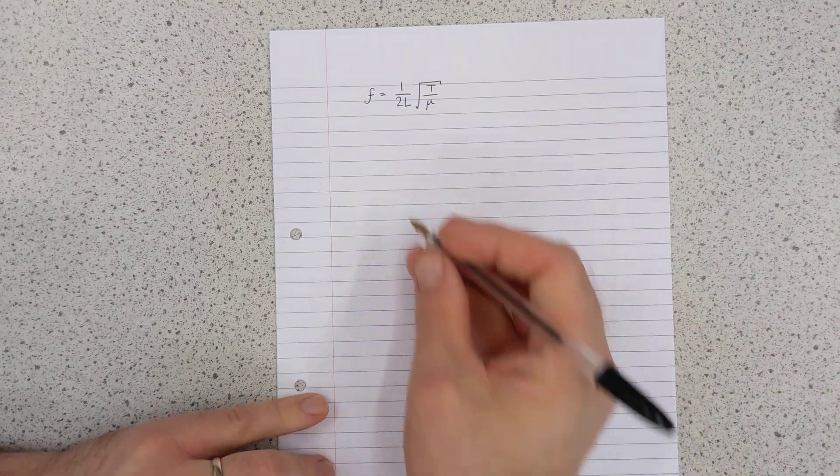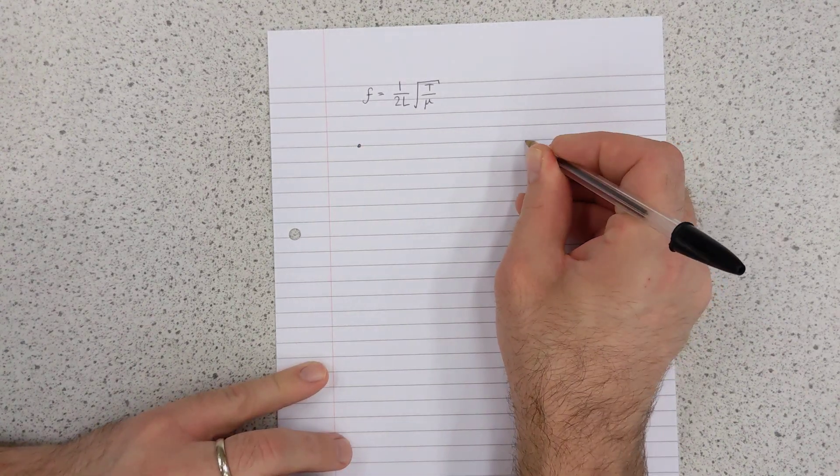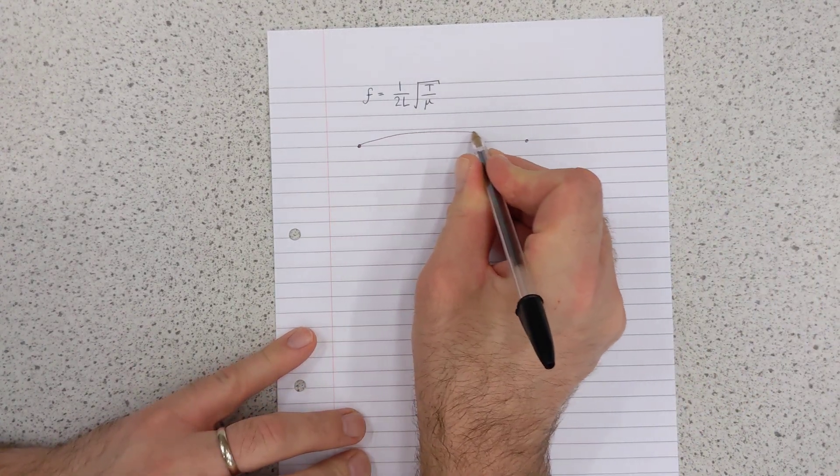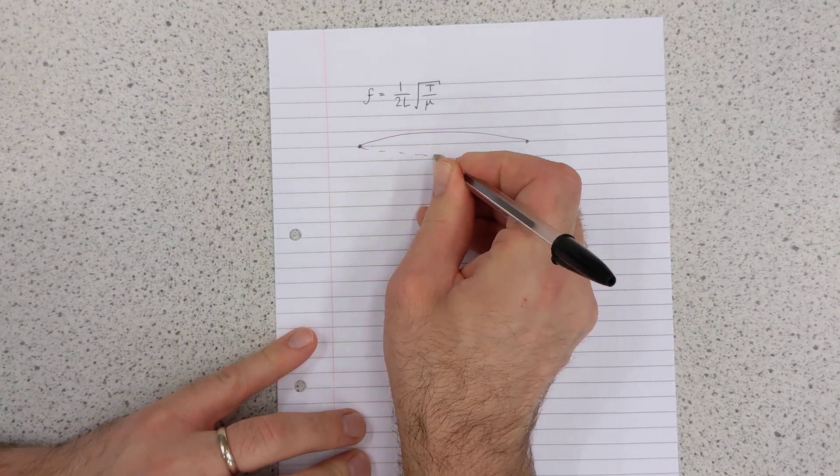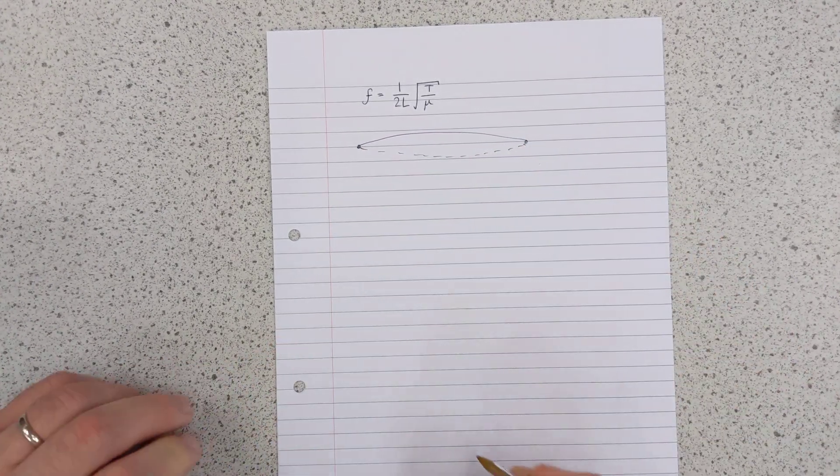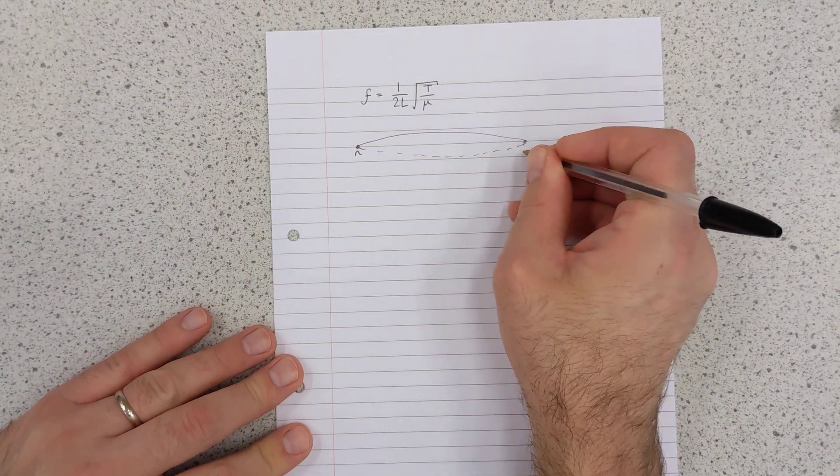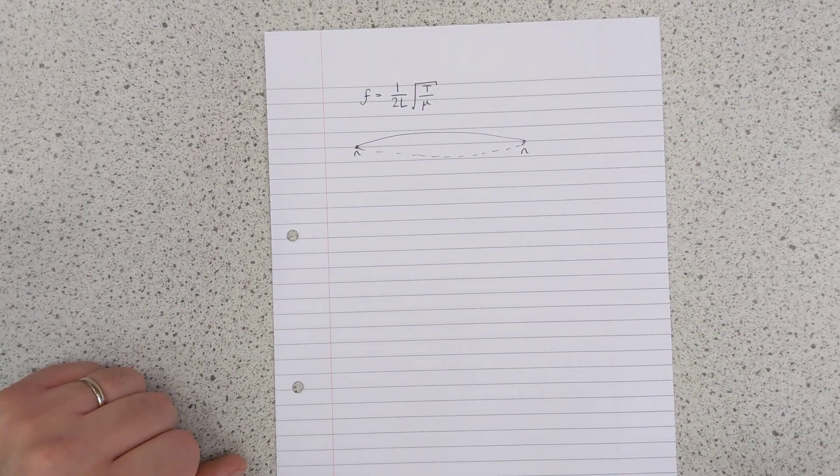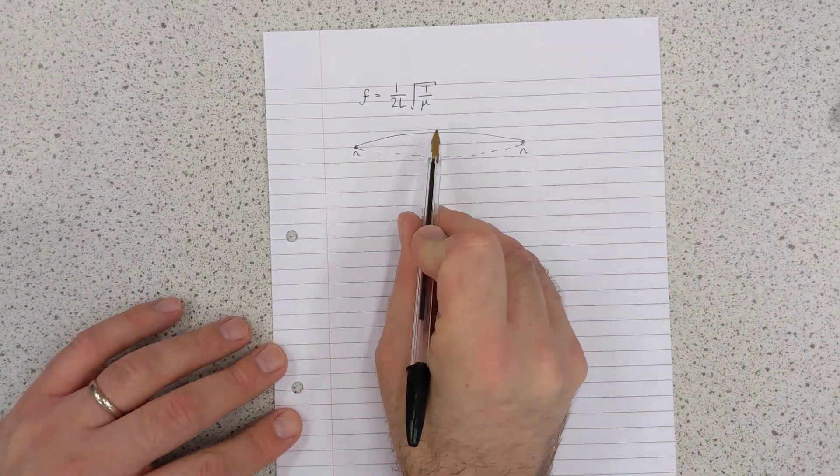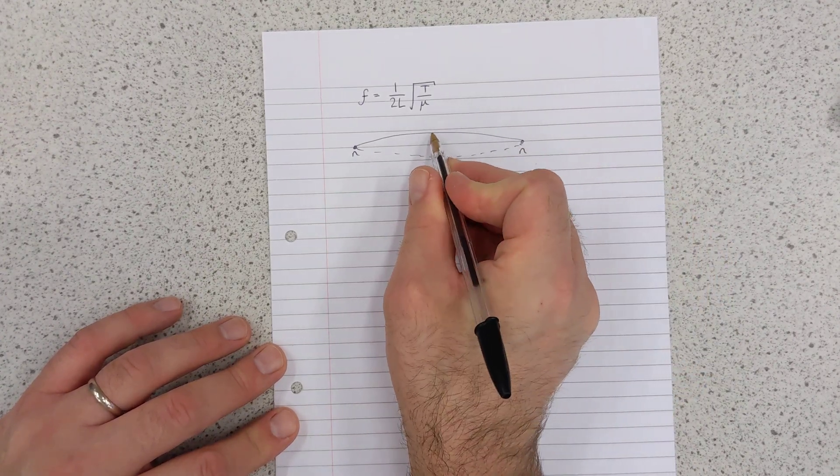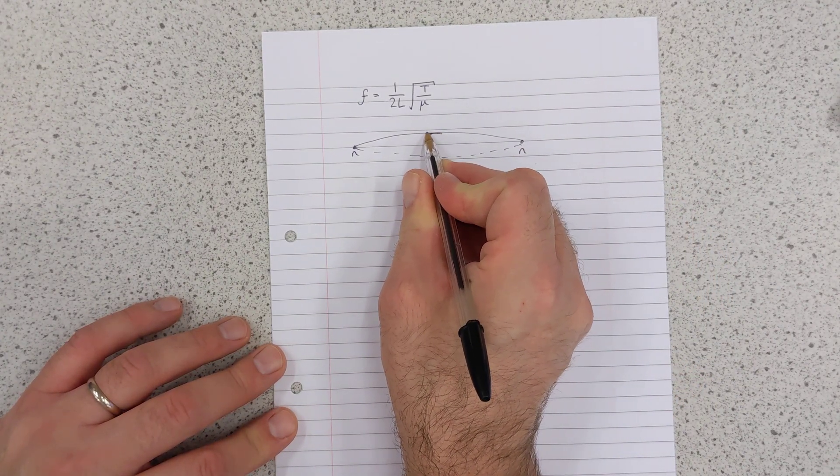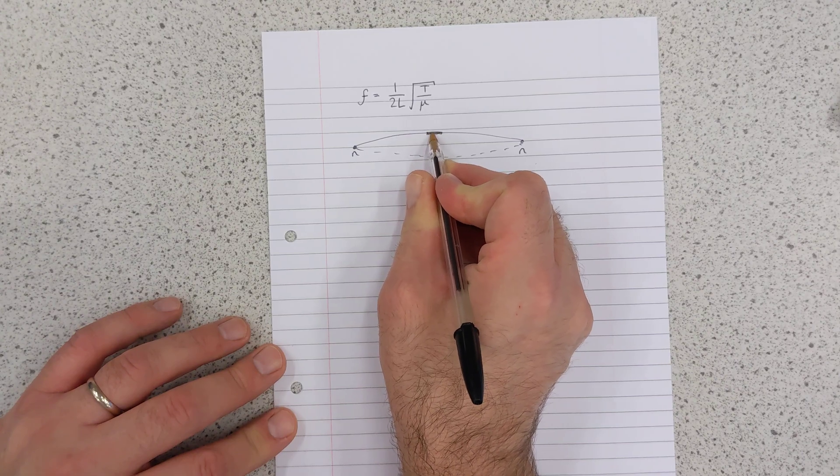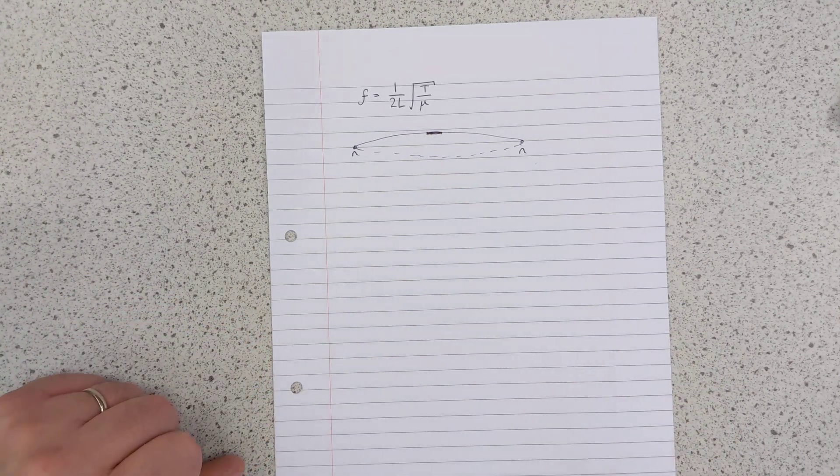Well, let us consider a stationary wave of the first harmonic, which looks something like this, probably drawn a little bit better than that, with a node at each end. What we're going to do is consider an element of this string on this one-dimensional stationary wave right in the middle there.